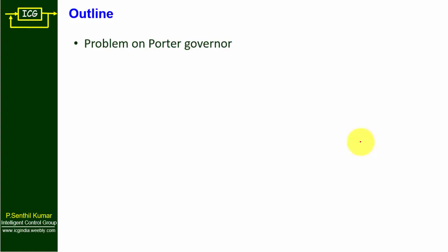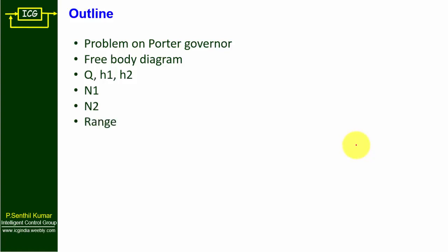In this lecture we are going to discuss a problem on the Porter governor. For the given problem, we need to draw two free body diagrams. Using these, we need to find the q value, and also h1 and h2 — the heights of the governor at minimum and maximum speed respectively. Using h1 and h2 we find n1 (minimum speed) and n2 (maximum speed) of the governor.